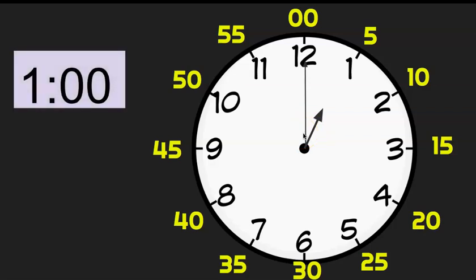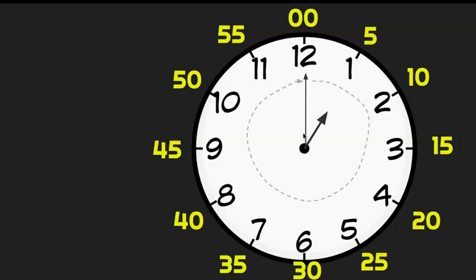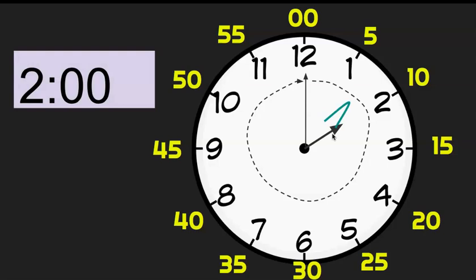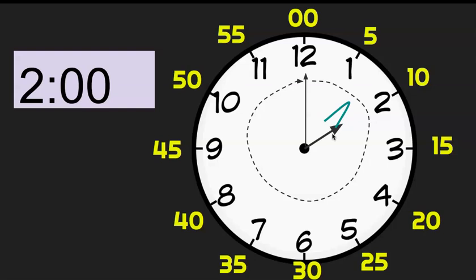It takes one hour to get there. So I'm going to move my minute hand all the way around the clock one time. When it moves around the clock one time, it also moves my hour hand one hour. My minute hand is going to look like it's in the same spot and my hour hand is just going to move one hour. So I would have arrived at the water park at two o'clock. One hour is my elapsed time — beginning time was one o'clock and ending time was two o'clock.